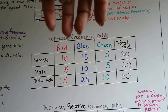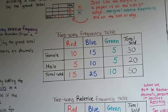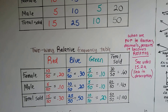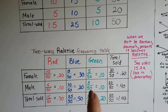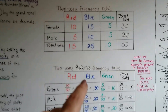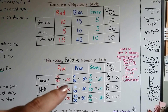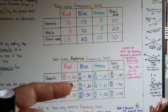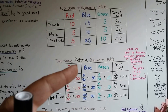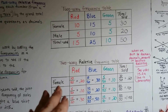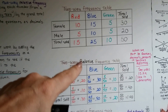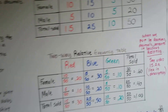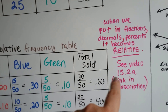The minute it's two-way, we've now got color and gender - two types of data. Now a two-way relative frequency table: the minute we put in the fractions, decimals, or percents, it becomes relative. We went from a two-way frequency table to a relative frequency table because we went from just having the numbers to having fractions and decimals or percents. That makes it relative frequency because now it's a ratio. Maybe you can think of the R for relative with R for ratio.